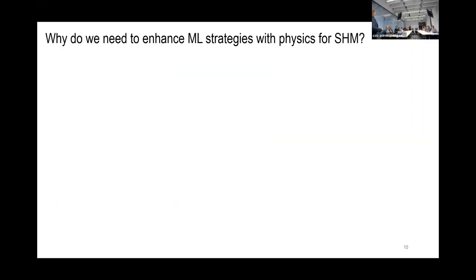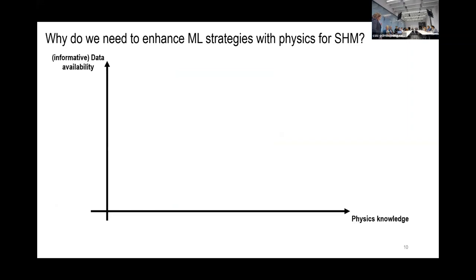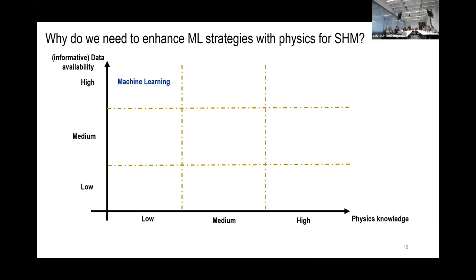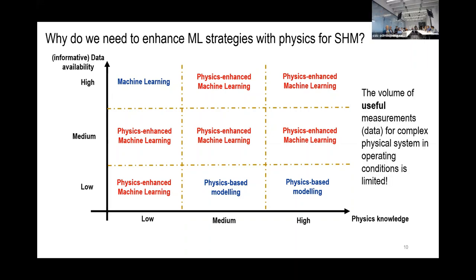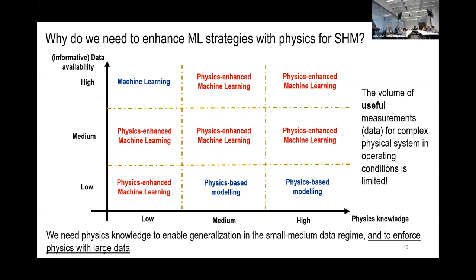So why do we need physics? Why do we need to enhance machine learning? Because data is not enough. If you think about it in terms of physics knowledge and data availability, we can think of nine regimes. If we have lots of informative data, then let's go for machine learning. But if we don't have enough data but we have lots of physics knowledge, we will be more comfortable using physics models. Most of the time we are sitting in between — we know some physics, we have some data, and we want to make sense of it.